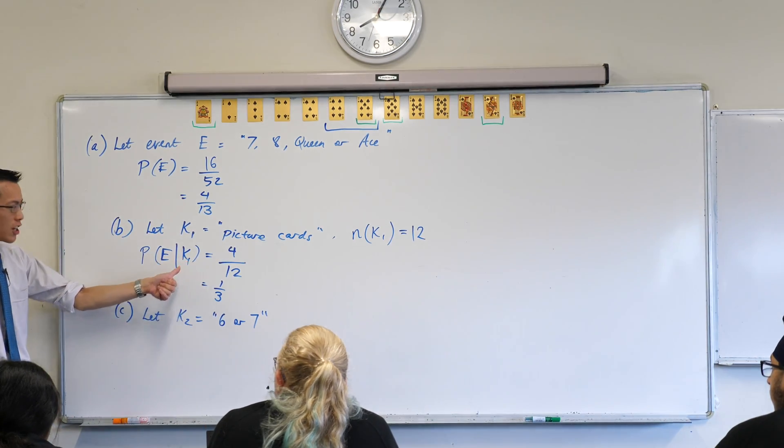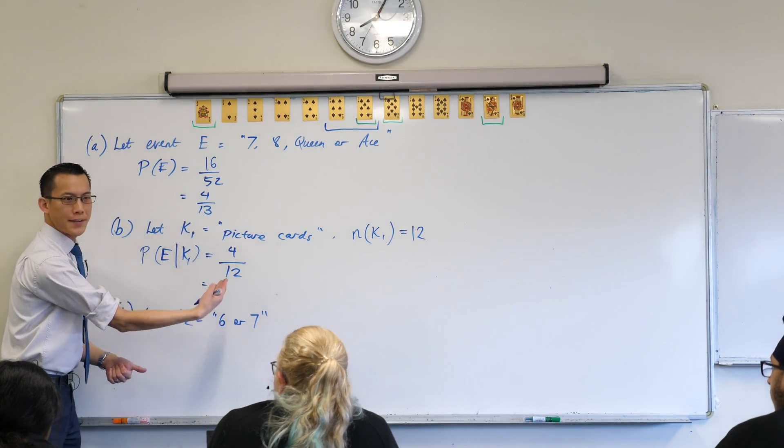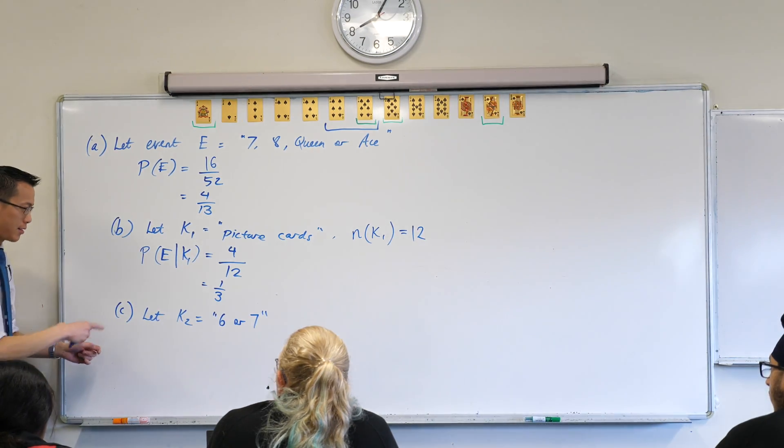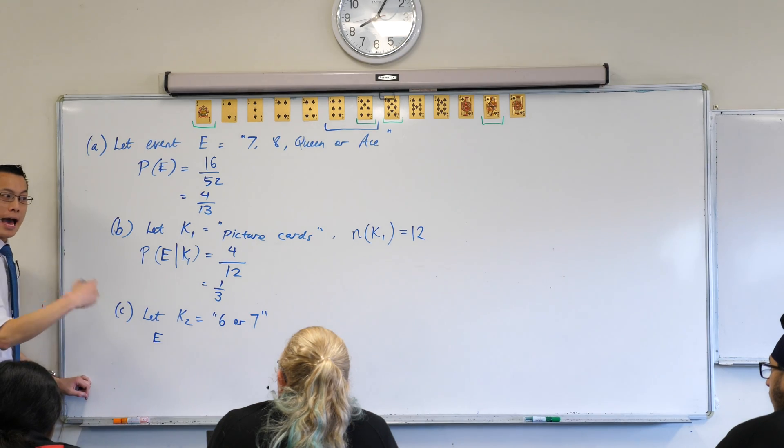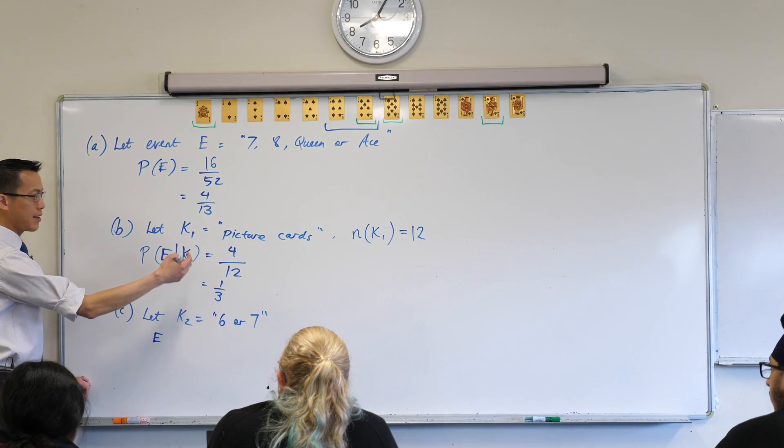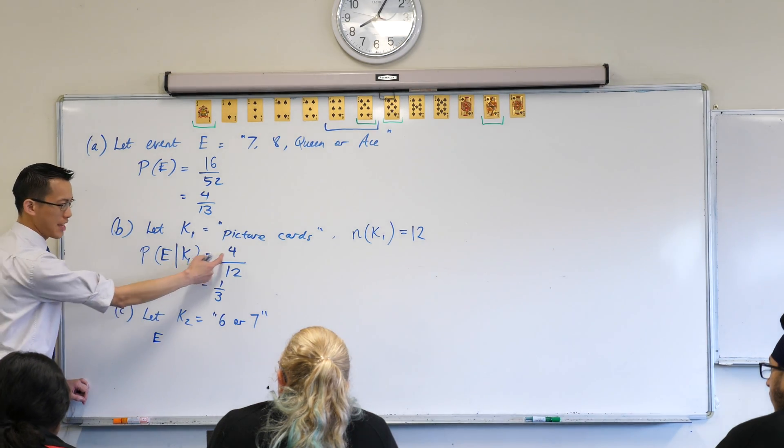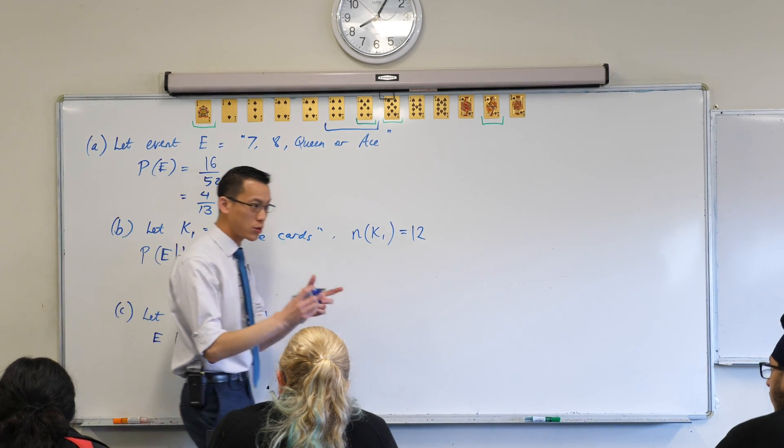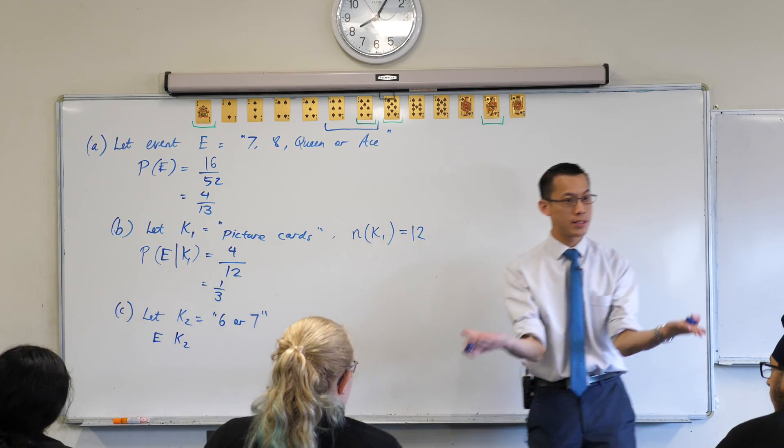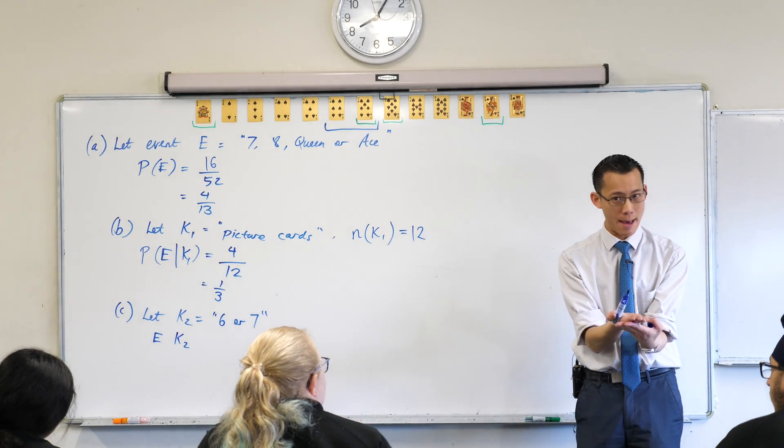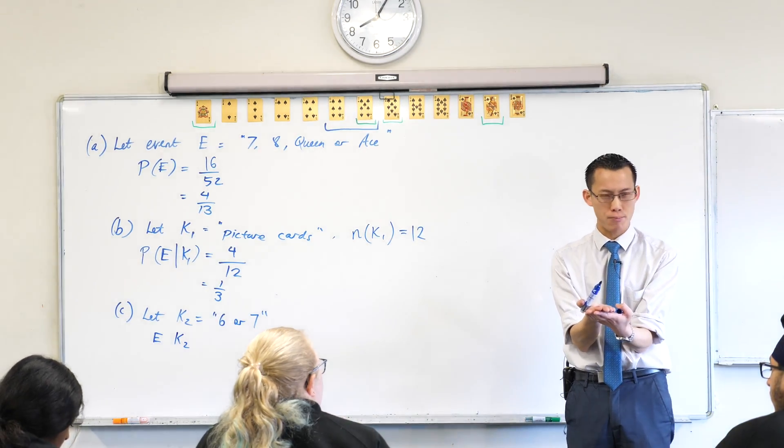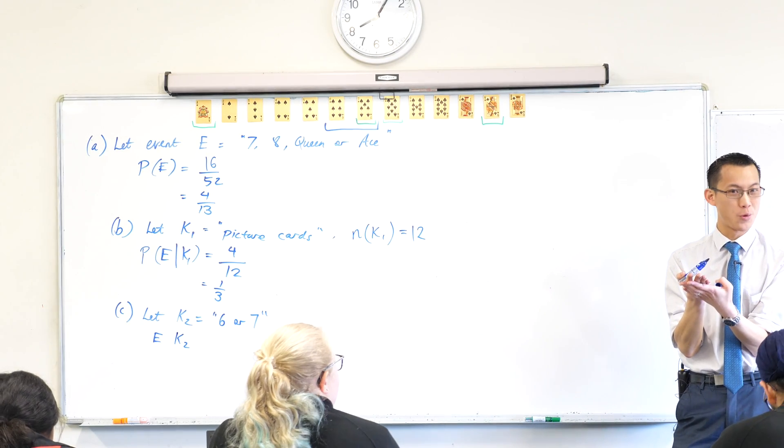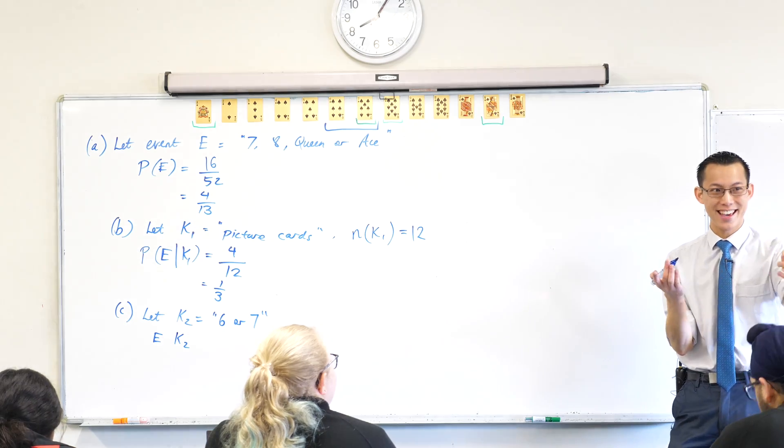So this idea before of talking about how the favorable events change, we actually have notation to represent this. What we're saying is our event, it's happening at the same time as this other known information. That's what this means. So we have language, we have notation symbols for when two things are happening and we want to consider them simultaneously, when there's an overlap between them. Does anyone remember which symbol would be appropriate here?